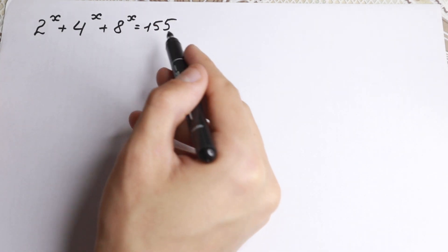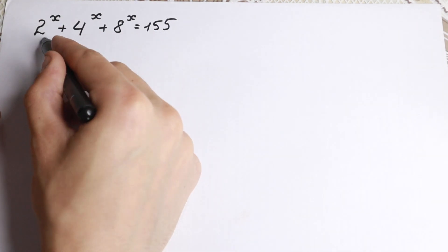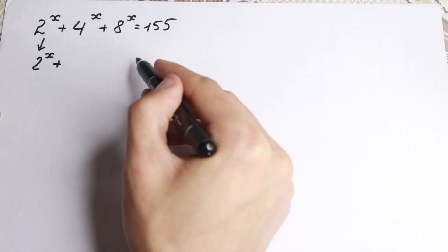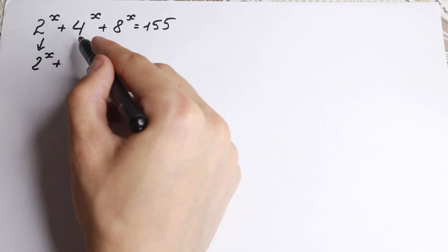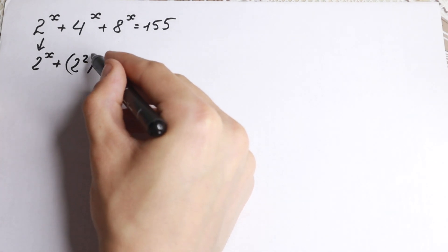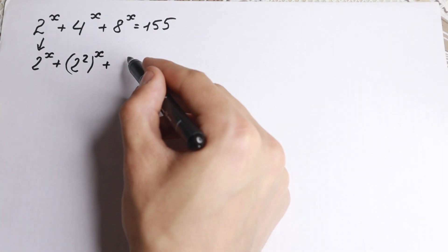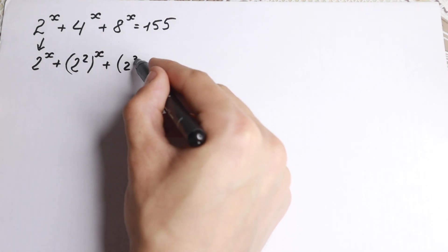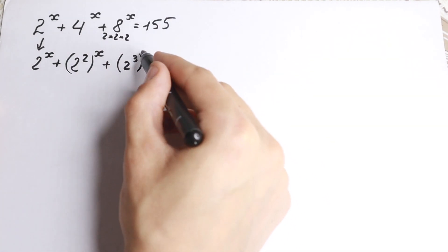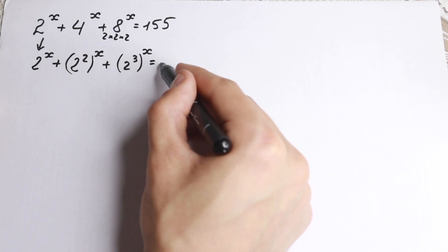We have 2 to the x — we cannot simplify that further. But 4 to the power x is a really good number because we can write it as 2 squared, raised to the power x. And 8 to the power x is also a good number because we can write it as 2 cubed raised to the power x, since 2 times 2 times 2 equals 8. So our equation becomes 2^x + (2²)^x + (2³)^x = 155.